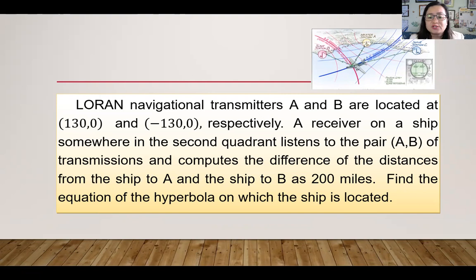LORAN navigational transmitters A and B are located at (130,0) and (-130,0) respectively. A receiver on a ship somewhere in the second quadrant listens to the pair AB of transmissions and computes the difference of the distances from the ship to A and ship to B as 200 miles. Find the equation of the hyperbola on which the ship is located.